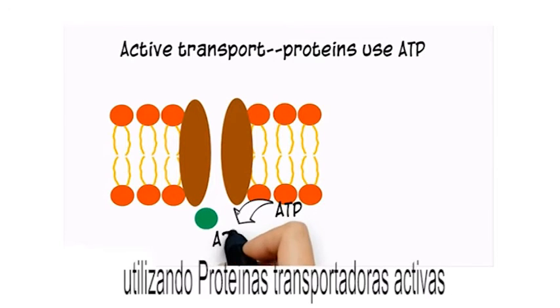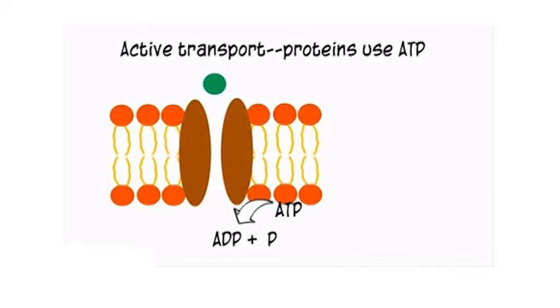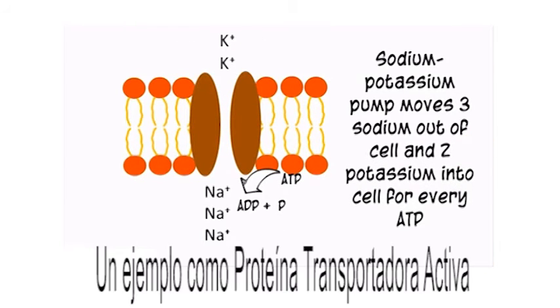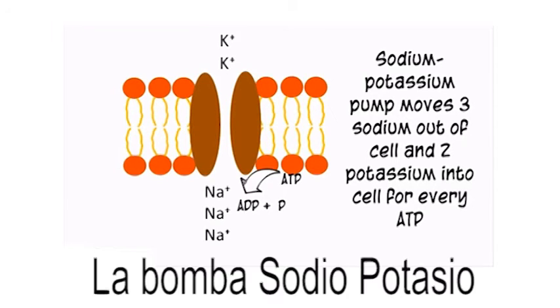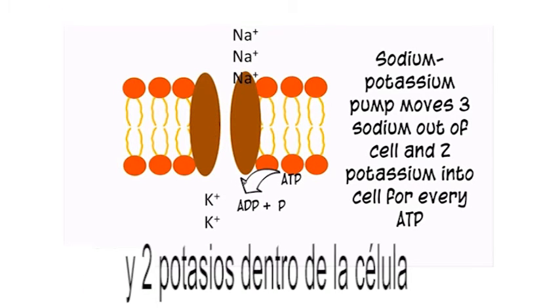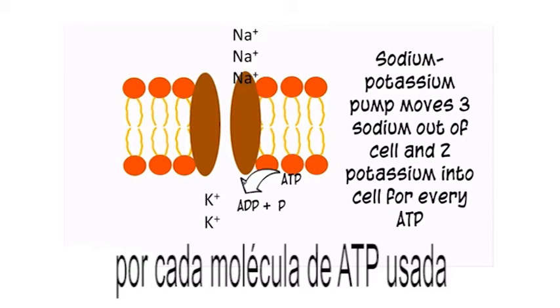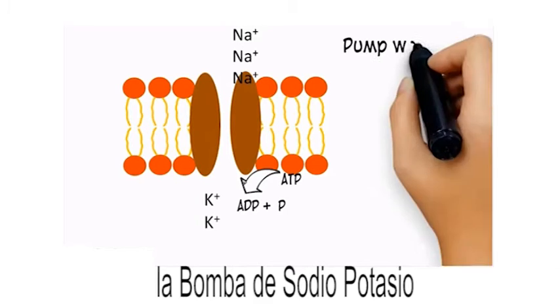Substances can move against their gradients using active transport proteins. These proteins use ATP for energy. An example of an active transport protein is the sodium potassium pump. The sodium potassium pump moves three sodium outside of the cell and two potassium inside of the cell for every molecule of ATP used. The sodium potassium pump works to maintain concentration gradients.